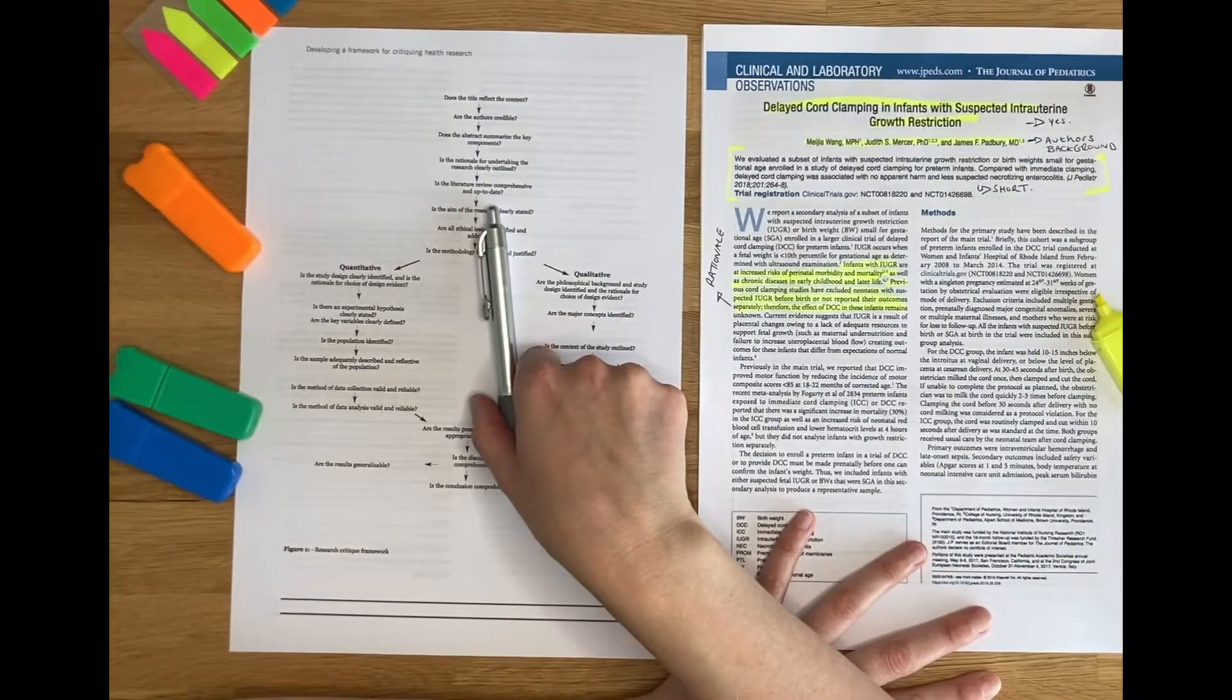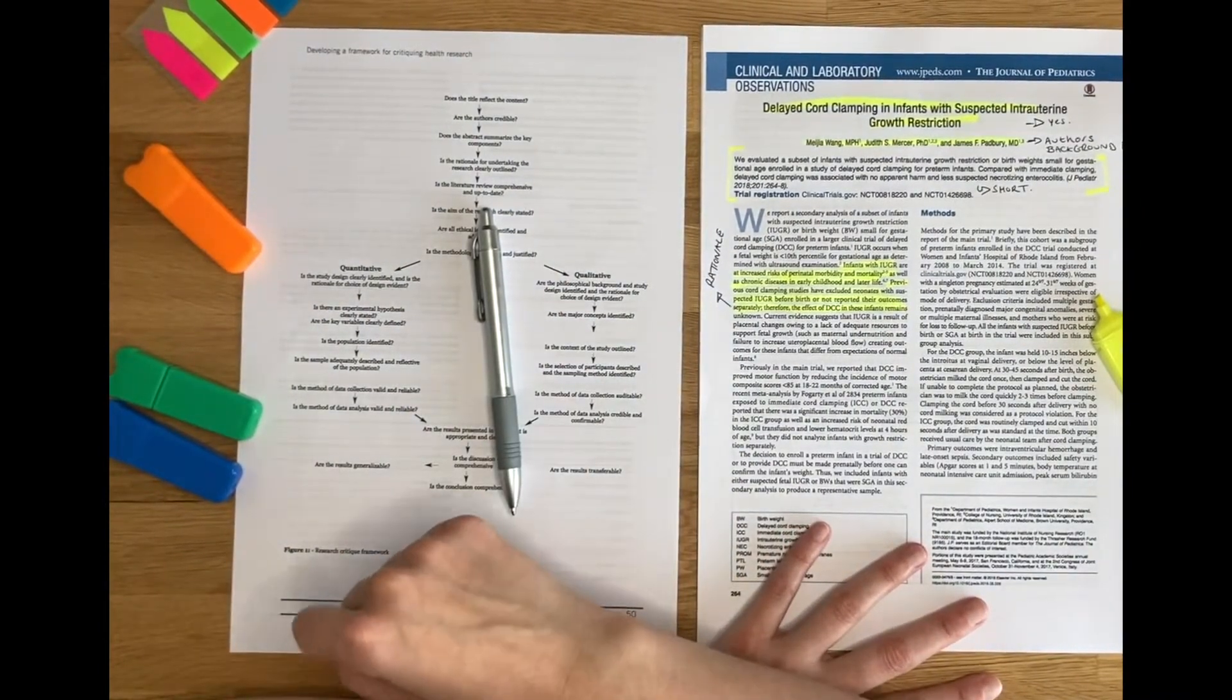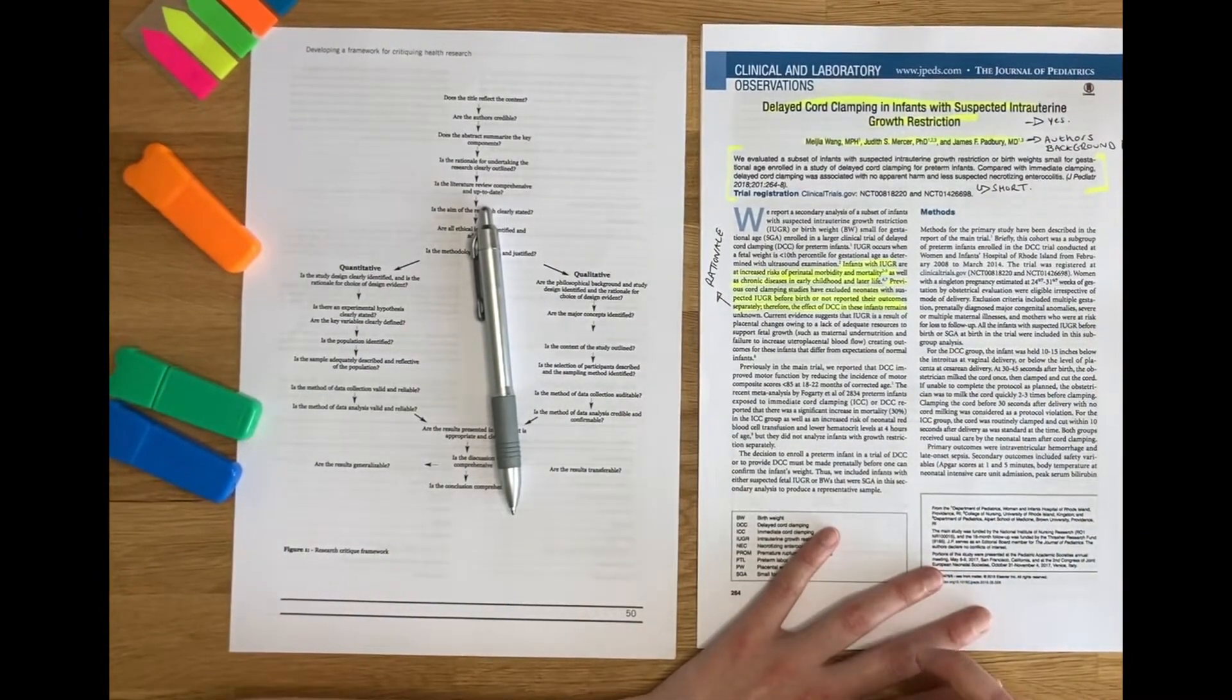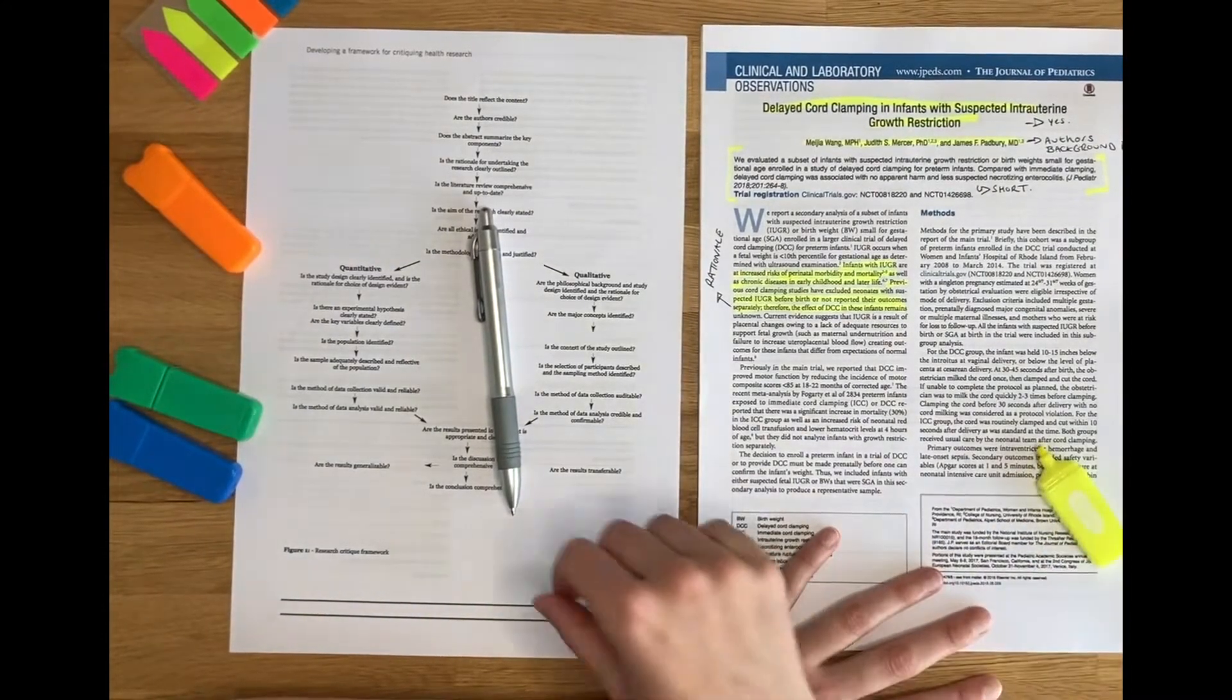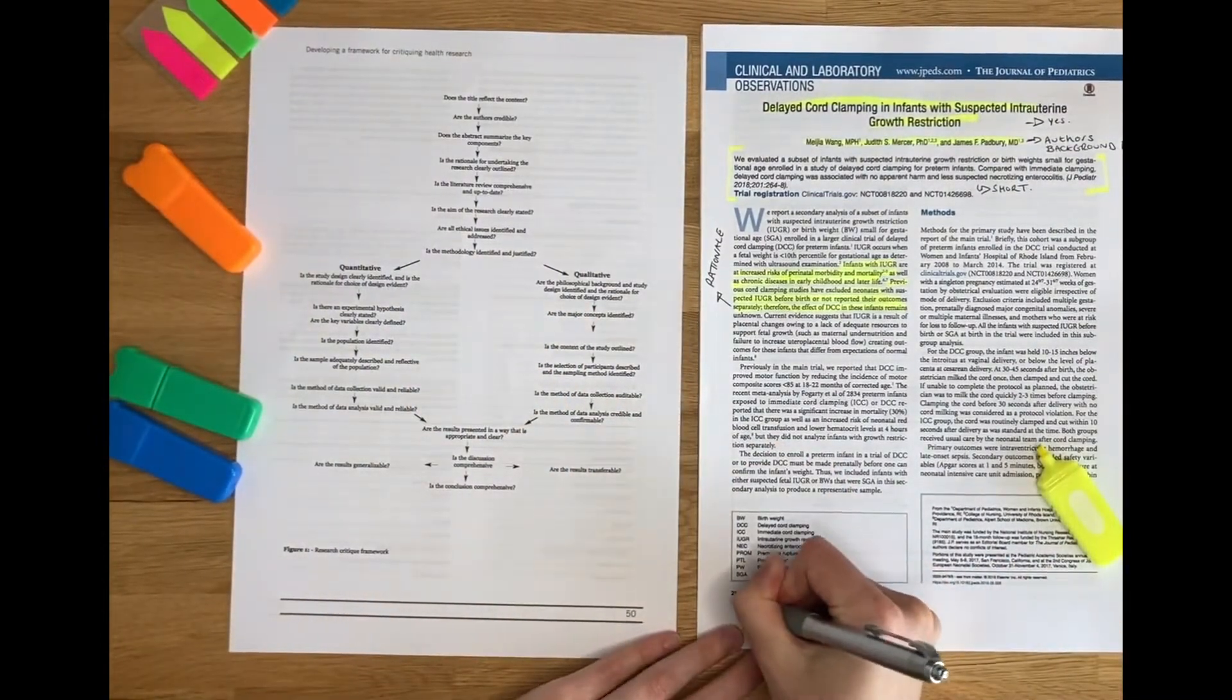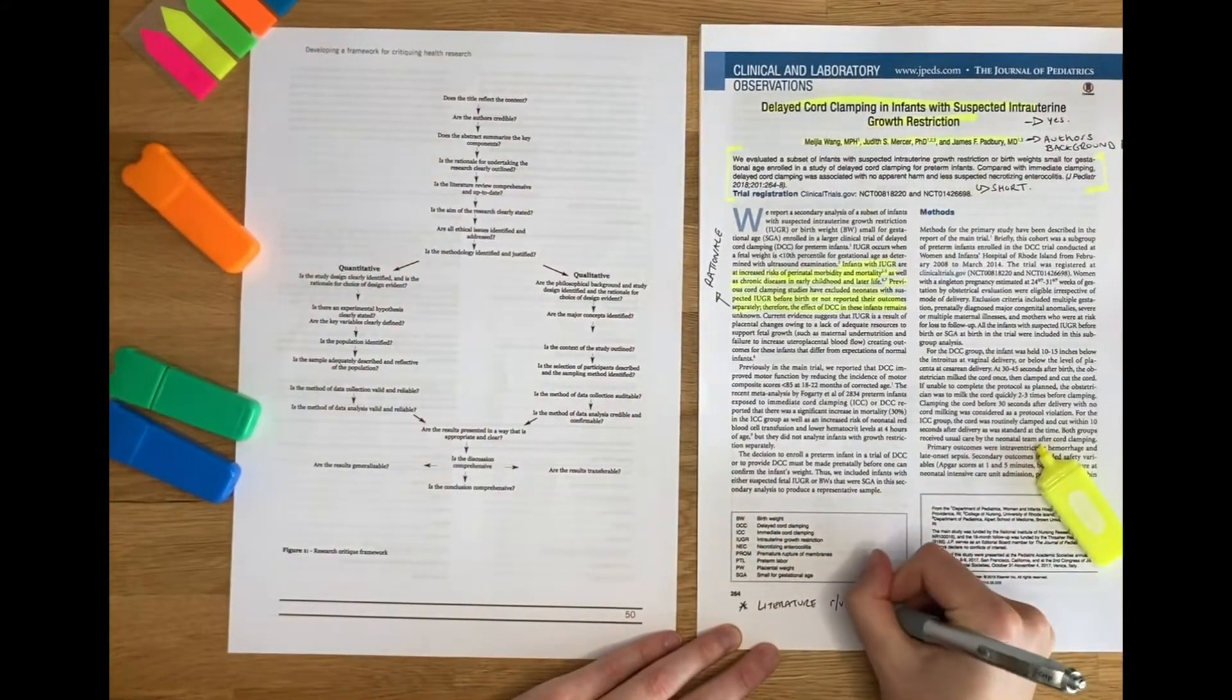I'm going to continue my way through the framework. So is my literature review comprehensive and up to date? Again, I'm going to keep reading the background. This study doesn't have a very comprehensive literature review. So I might need to write that. I can either write it on my framework or I can write it here. So at the bottom, perhaps I could put a star and say literature review, not thorough.